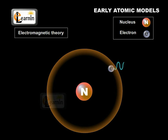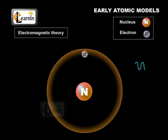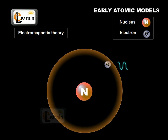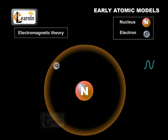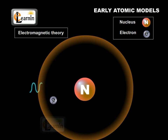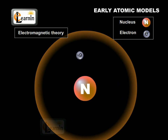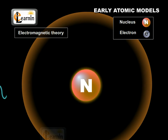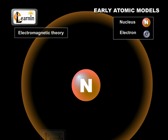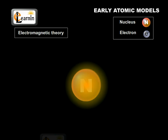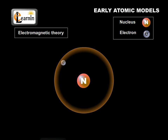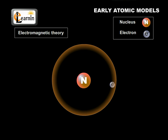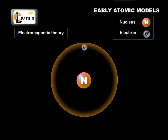However, according to electromagnetic theory, such circulating electrons should radiate energy continuously. If this is so, gradually the electrons will lose energy by circulating in circles of decreasing radii. After some time, they should fall into the nucleus. This will lead to the collapse of the atom. However, this does not happen and the atom is stable. Therefore, the Rutherford model cannot account for the stability of the atom.